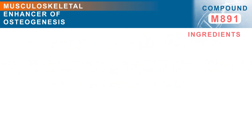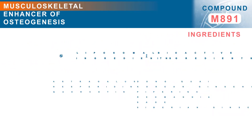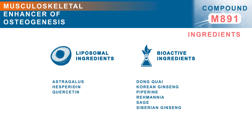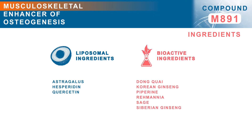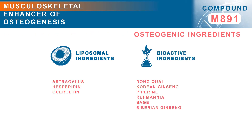Compound M891 consists of the following ingredients. Liposomal Ingredients: Astragalus, Hesperidin, and Quercetin. Bioactive Ingredients: Dong Quai, Korean Ginseng, Piperine, Rosemary, Sage, and Siberian Ginseng. Osteogenic Ingredients are highlighted in red.